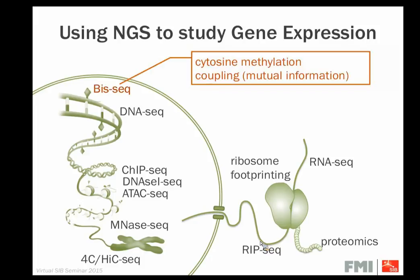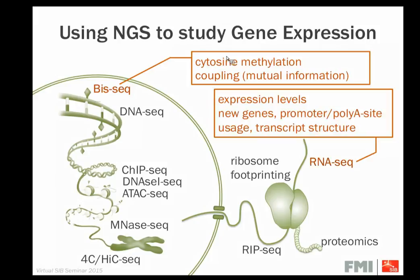These datasets have turned out to be extremely rich. They usually measure one thing, but give you additional information on top. For example, bisulfite sequencing is used to measure cytosine methylation, but you can also look at mutual information between neighboring cytosines and whether they're co-regulated. Or RNA sequencing is usually done to get gene expression levels, but you can also use it to find new genes, study promoter or poly-A site usage, and transcript structure. That's the theme of today's talk: using NGS datasets to find additional things beyond what they were generated for.